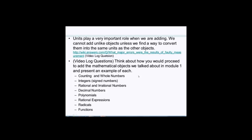Doing research in mathematics is exactly what you just did. You took objects from each category, applied addition you already know, and extended that process to a different set of objects. Mathematicians take a problem they know how to do and see if they can extend that observation or process to other objects. That's what doing research in mathematics is — discovering that something you know how to do can be extended, following the same logical process.